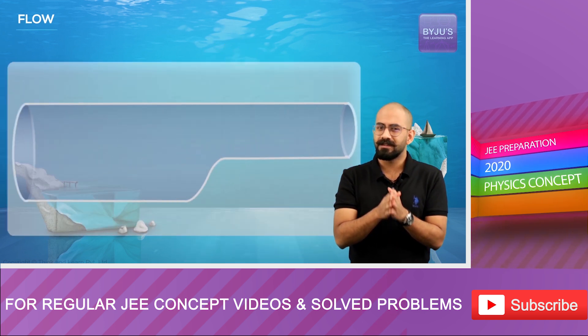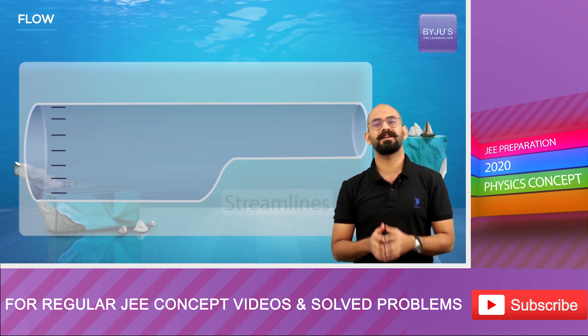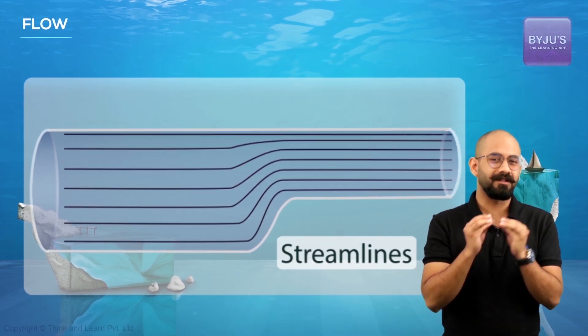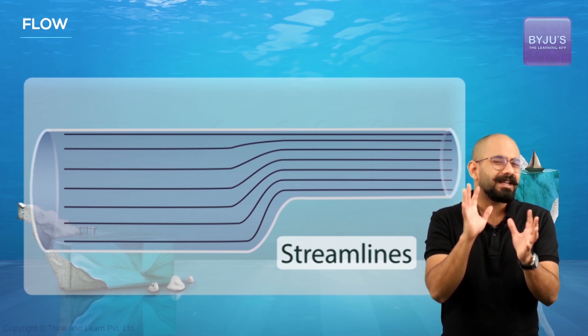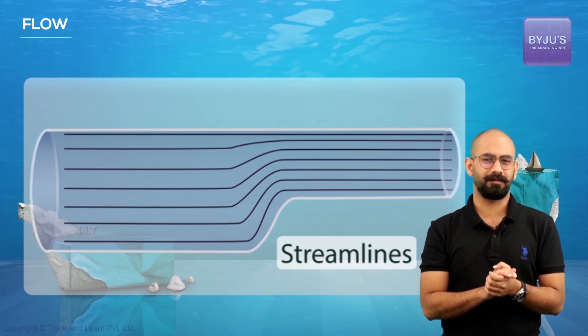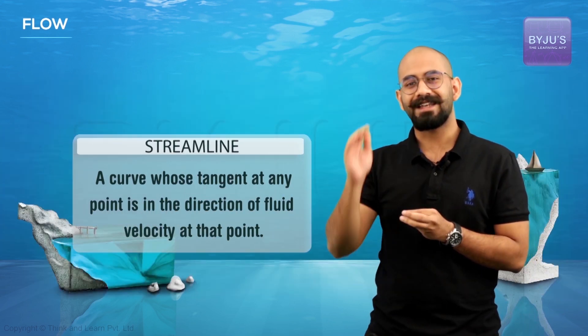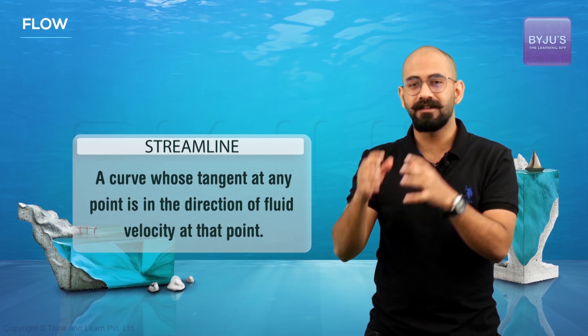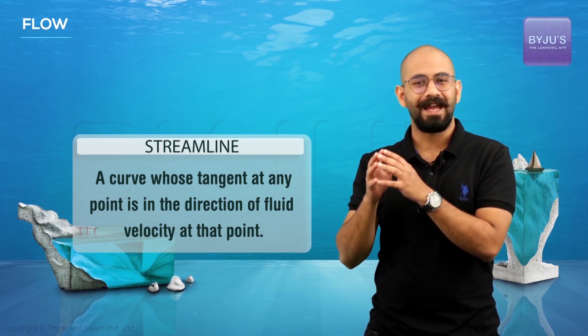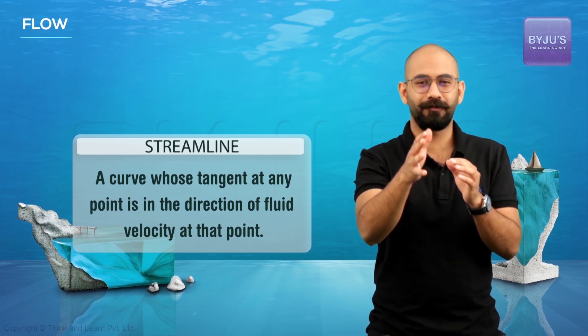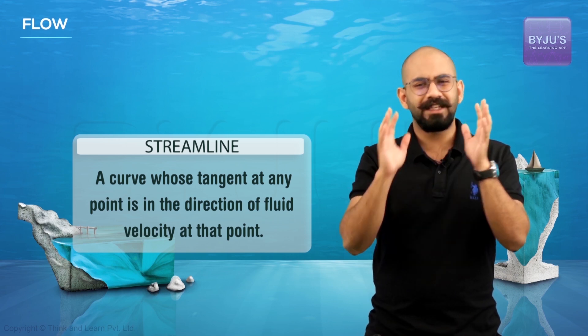So we represent fluids that are flowing using streamlines. Streamlines are just a theoretical construction, something like magnetic field lines. They are actually defined as a curve whose tangent at any point is in the direction of fluid velocity at that point. Now that might be a little tough to understand immediately, so let's just take an example.